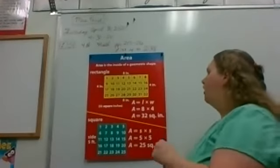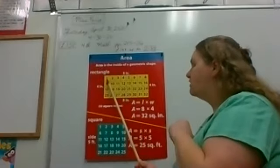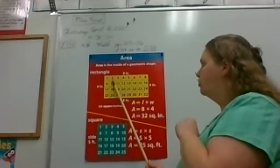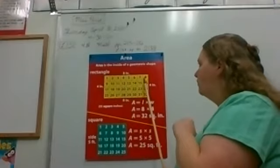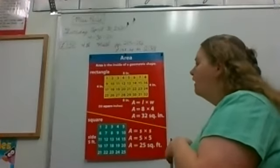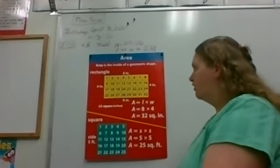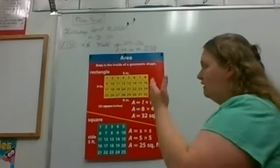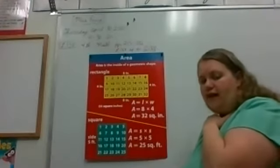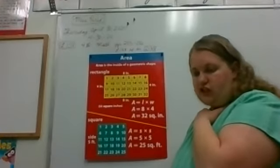Up here I've got our chart. Area is the inside of the geometric shape. Here's a rectangle divided into square units. You can count all of these and you get to 32. So that's one way to find out how many square inches are in this rectangle.